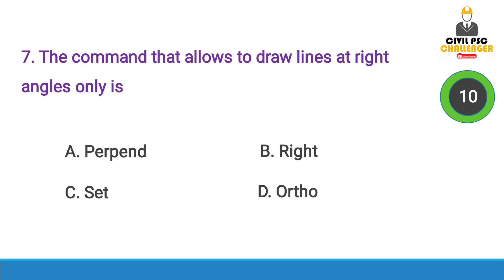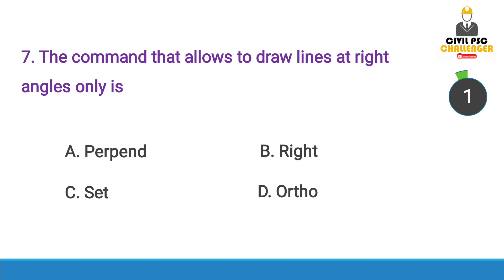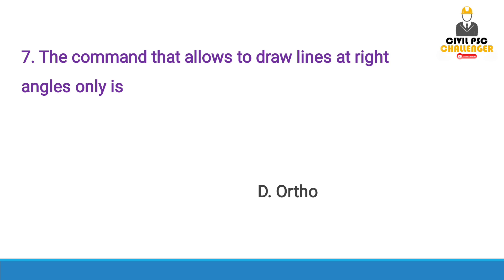Next question: The command that allows drawing lines at right angles only is — Answer option D, Ortho.